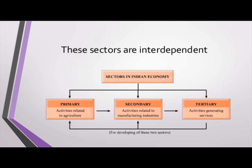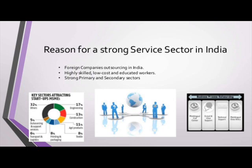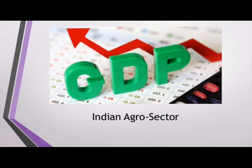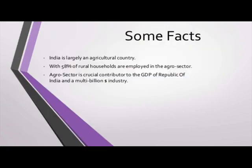The reasons for a strong service sector in India are: 1. Foreign companies outsourcing in India, 2. Highly skilled, low cost and educated workers, 3. Strong primary and secondary sectors. Some facts regarding the Indian agro sector: India is largely an agricultural country, with 58% of rural households employed in the agro sector. The agro sector is a crucial contributor to the GDP of India and a multi-billion dollar industry.